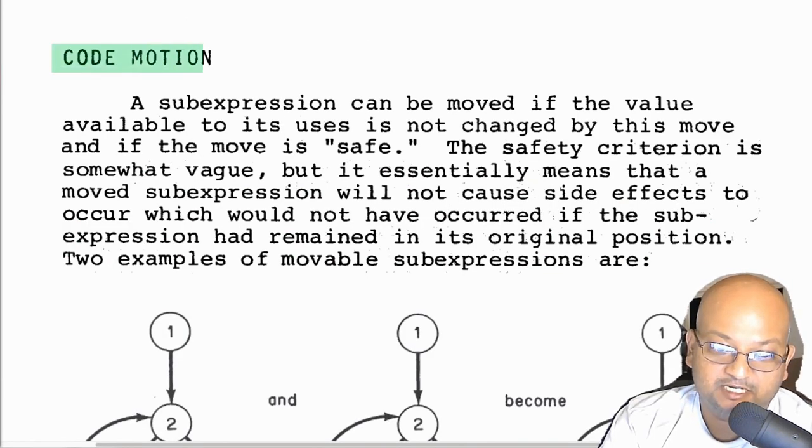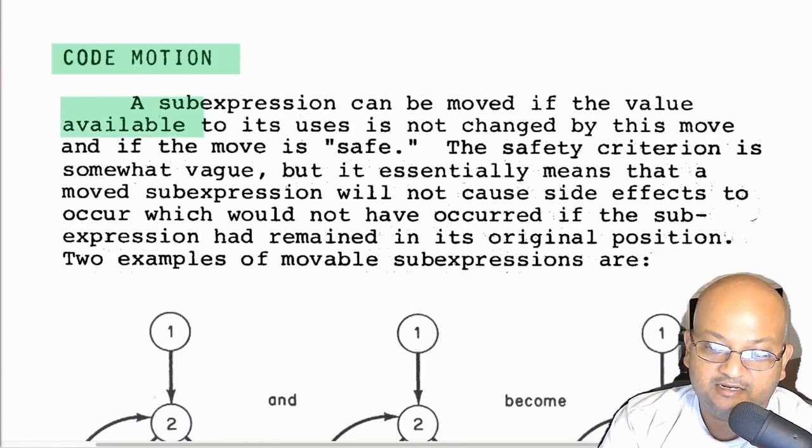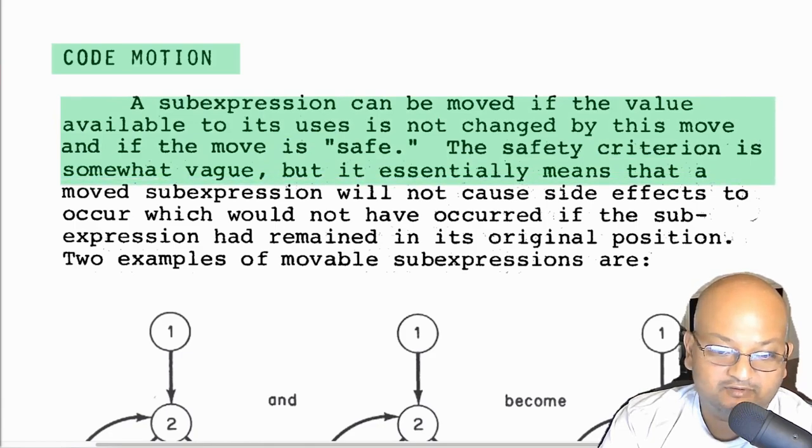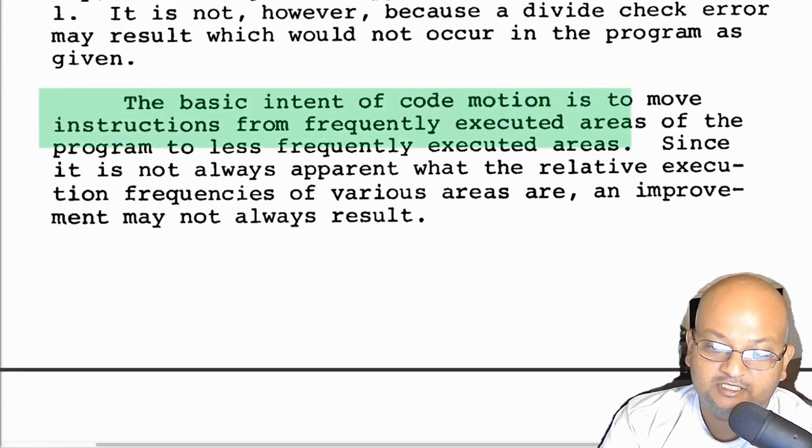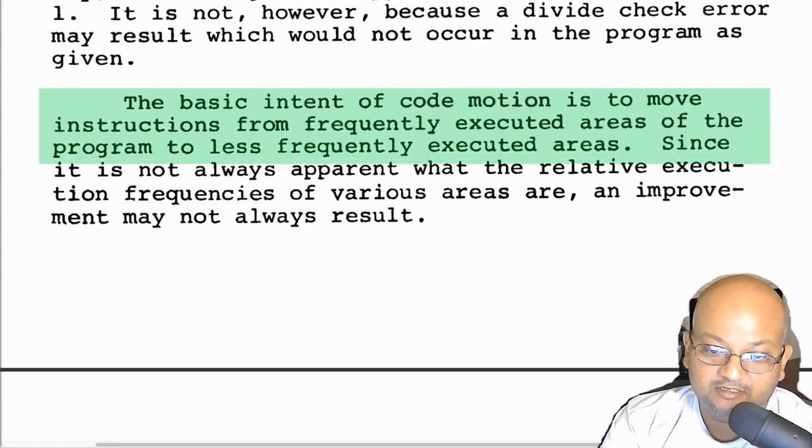The next big class of optimizations is code motion. The basic idea here is that you can move code around if it is safe to do so and if its use is not changed by moving it around. For example, if you are computing A into B inside the body of a loop, but those values don't change inside the loop, you could actually just compute it outside the loop and then use the value. And what you're trying to accomplish here is to move instructions from places that are frequently executed to places that are less frequently executed, so for example, from inside a loop to outside a loop.